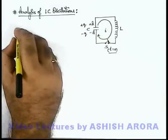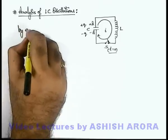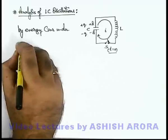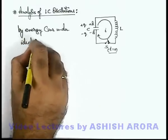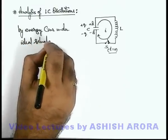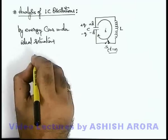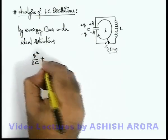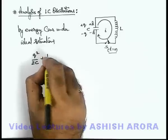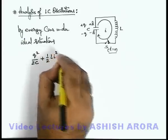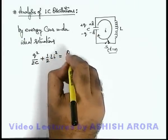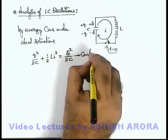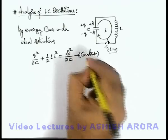By energy conservation under ideal situations, at any time the energy of the capacitor is q² by 2C, plus the energy of the inductor which is half L·i², and this must equal the initial energy of the capacitor which is q₀² by 2C. It should remain constant because total energy is conserved.